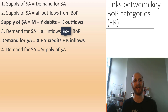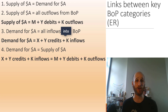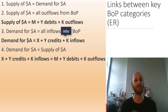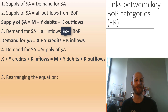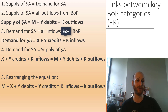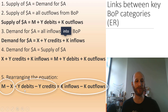We know from step one that demand and supply are equal under a floating exchange rate, so we can combine both sides into an equation. Demand for Australian dollars — exports plus income credits plus capital inflows — equals supply of Australian dollars — imports plus income debits plus capital outflows. We can now rearrange the equation: bringing imports and exports together, and income debits and income credits together, we get imports minus exports, plus income debits minus income credits, equals capital inflows minus capital outflows.